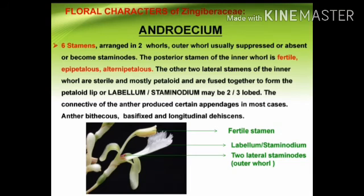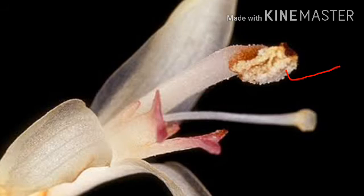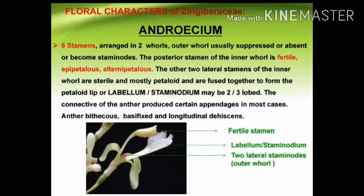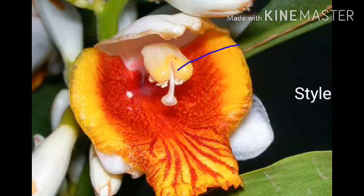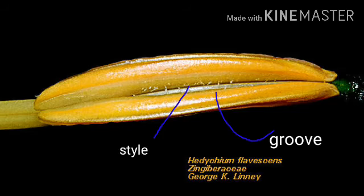The connective of the anther produces certain appendage-like structures in most cases — it consists of tubular projections, for example in Zingiber and Curcuma. Sometimes the connective may be grooved, and the style of the gynoecium passes through this groove. The anthers dehisce by longitudinal slits.